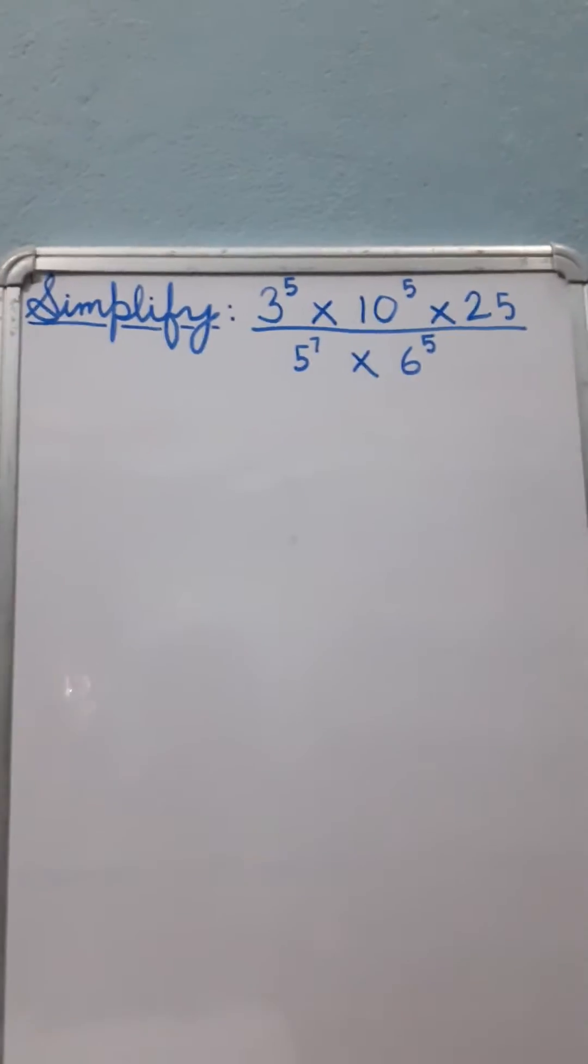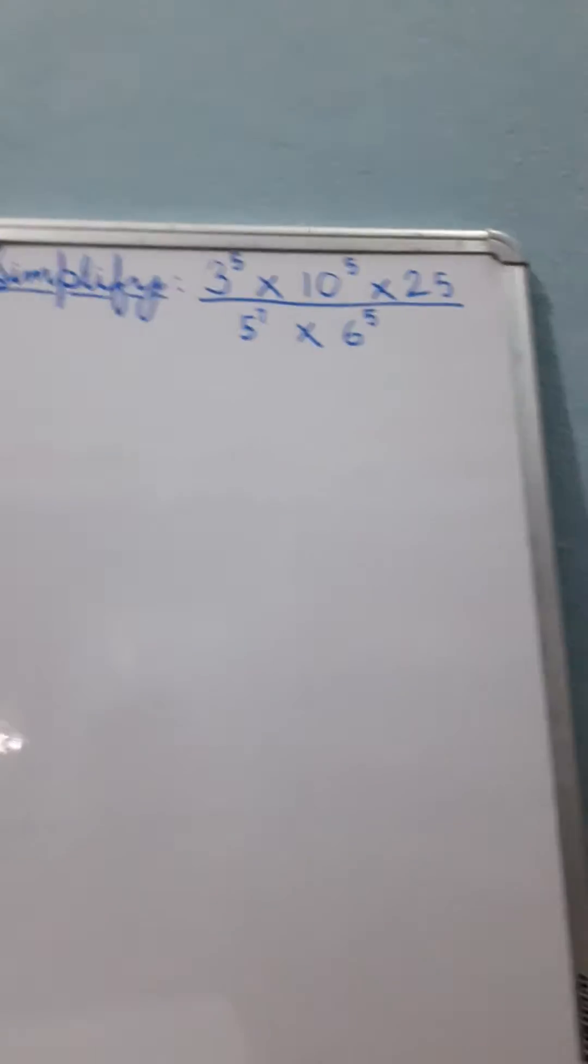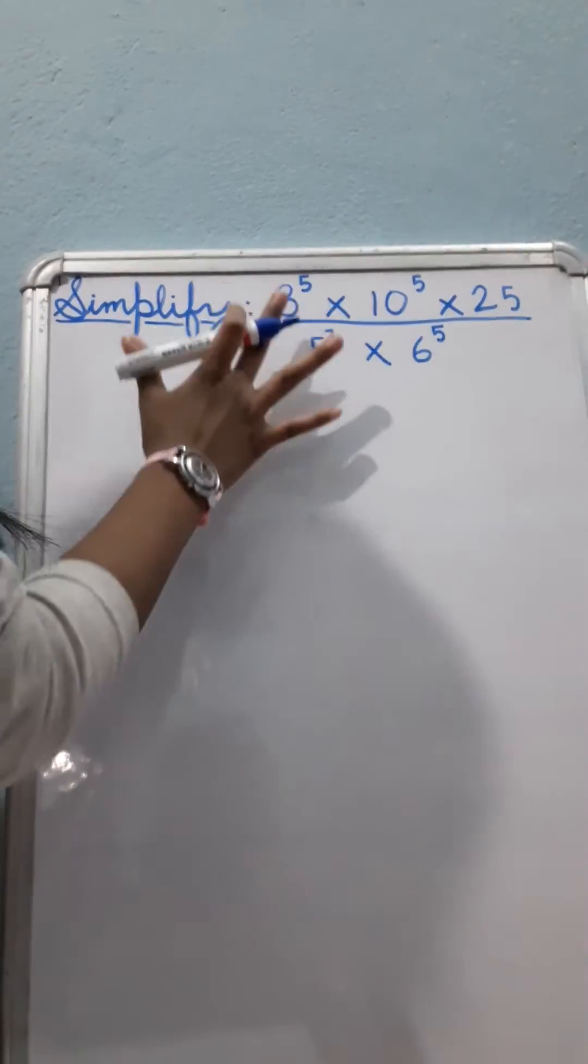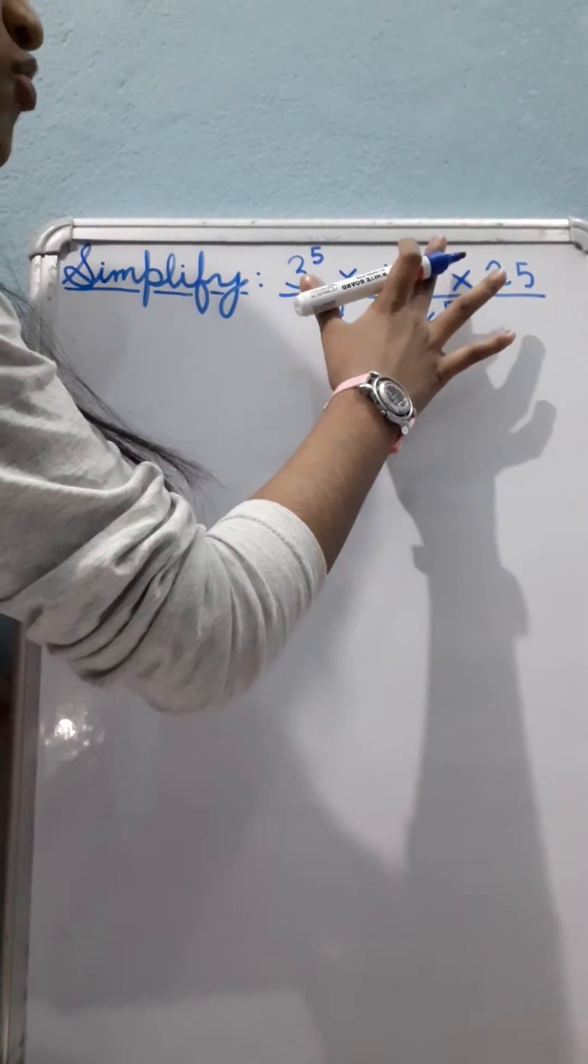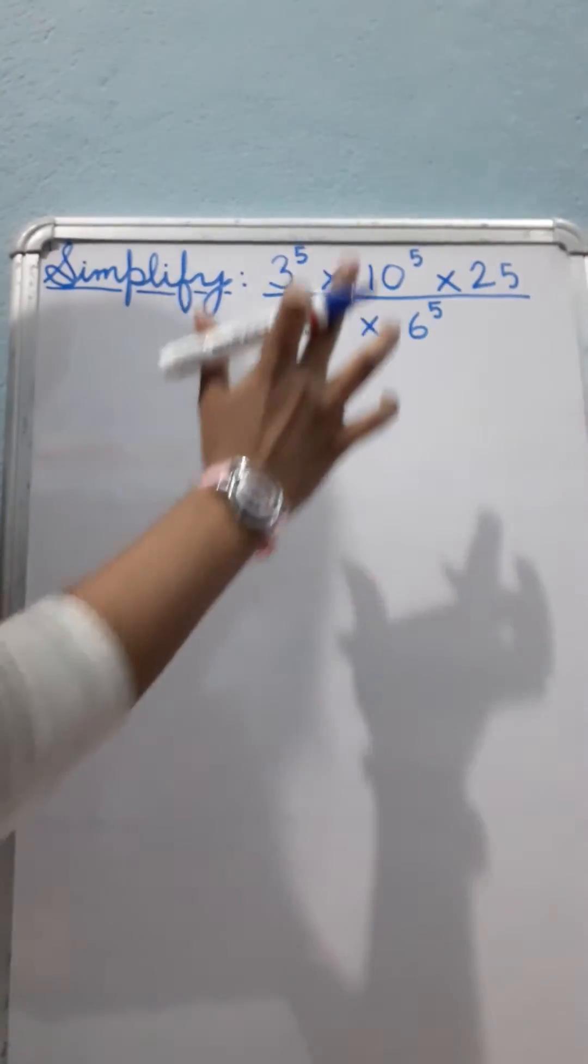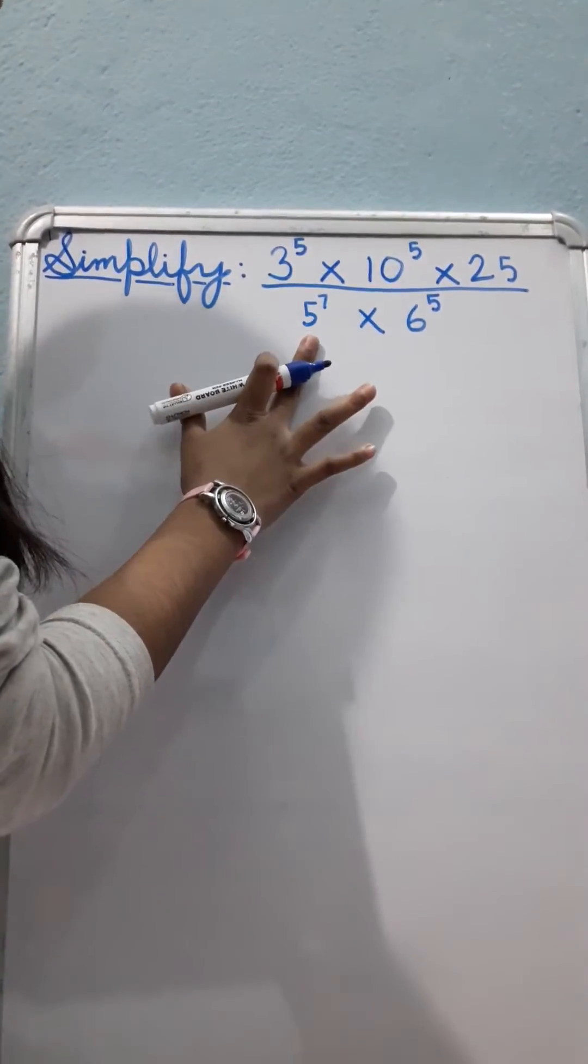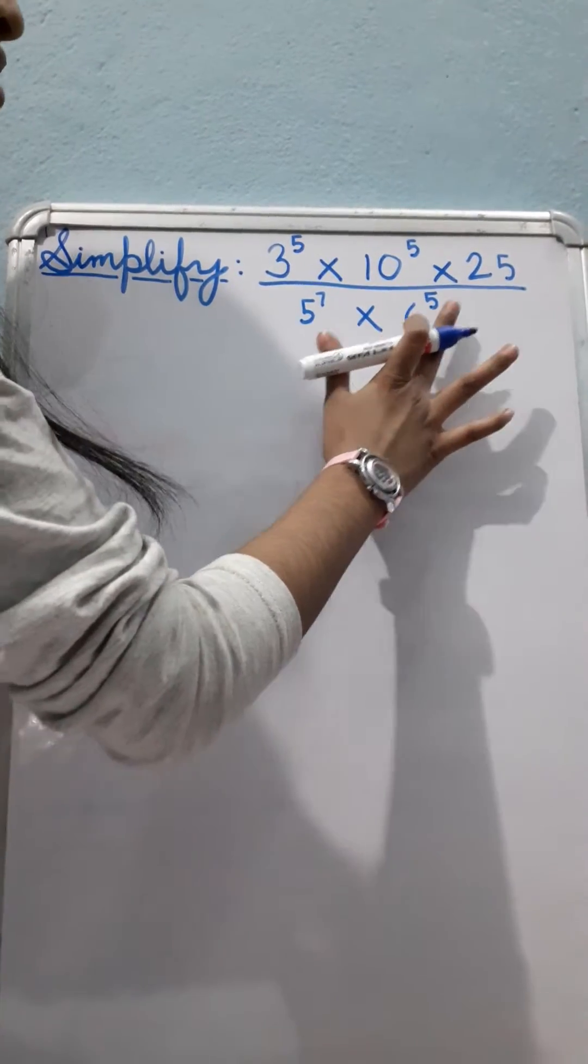This question is based on chapter exponents. So as you are seeing, our question is 3 raised to the power 5 multiplied by 10 raised to the power 5 multiplied by 25 divided by 5 raised to the power 7 multiplied by 6 raised to the power 5.